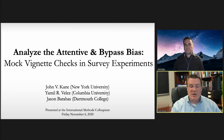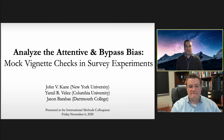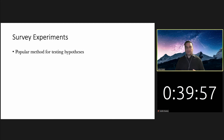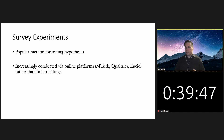Thanks so much. Thank you for having me. Today I'll be presenting a co-authored working paper with Emil Velez and Jason Barabas entitled 'Analyze the Attentive and Bypass Bias Mock Vignette Checks in Survey Experiments.' To begin with, survey experiments are a popular method for testing hypotheses in the social sciences, and particularly in political science. These are being increasingly conducted via online platforms — Amazon's Mechanical Turk would be one of the most common, also Qualtrics, as well as Lucid and several others.